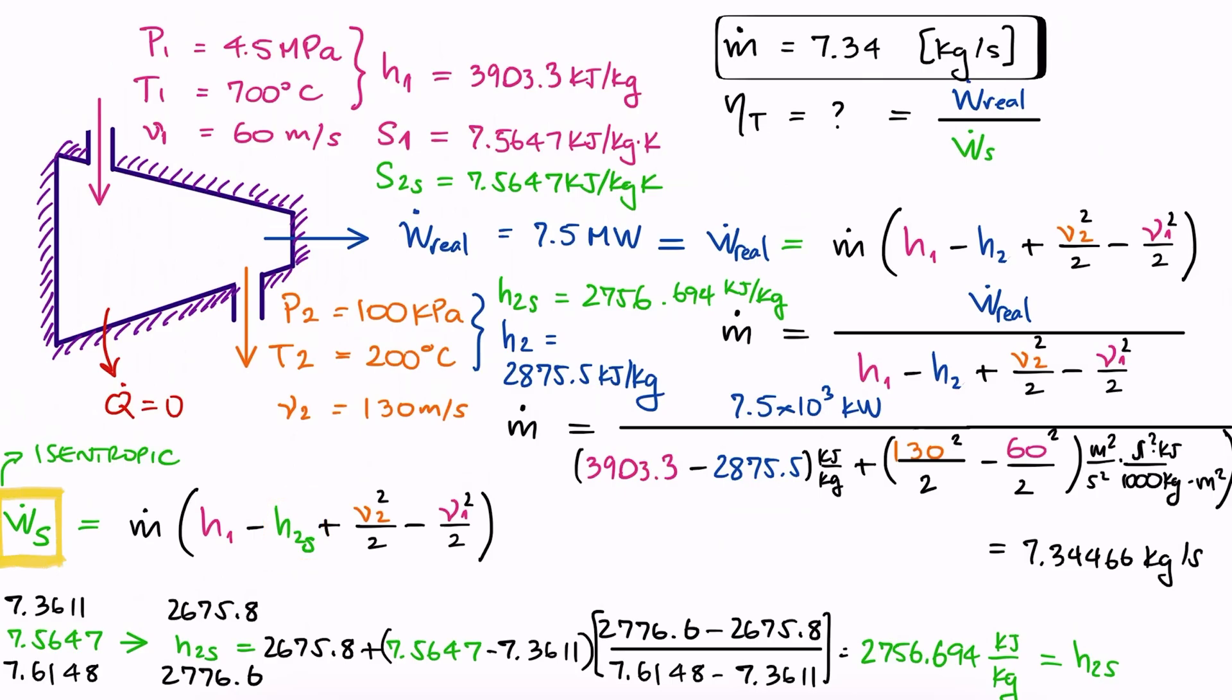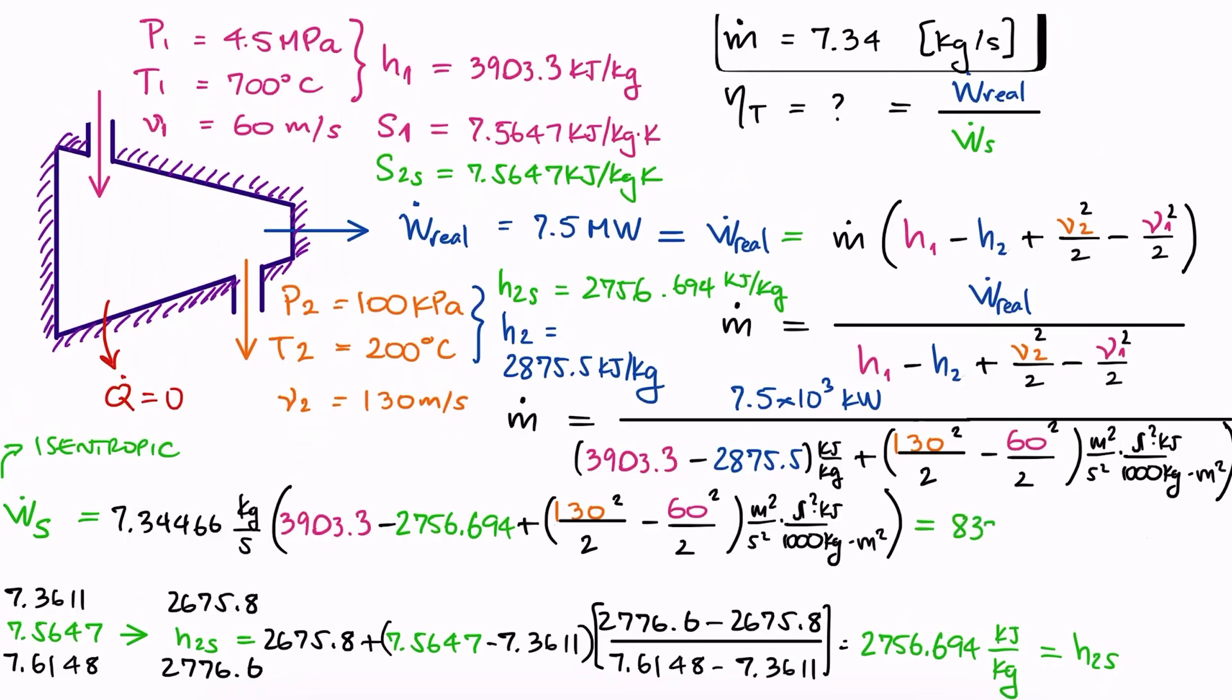To find the isentropic output, we substitute H1, which is the same for the actual or the isentropic case, H2S, which we just found, the velocities, once again accounting for the units, and the mass flow rate we found earlier. And with this value for the isentropic work output, we find the isentropic efficiency of the turbine, which was the second question.